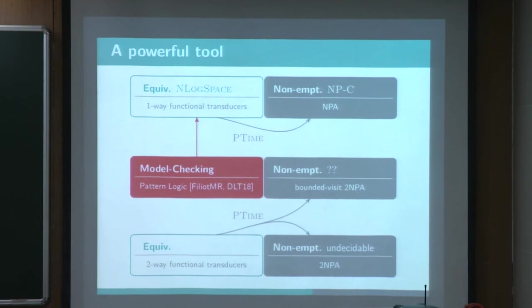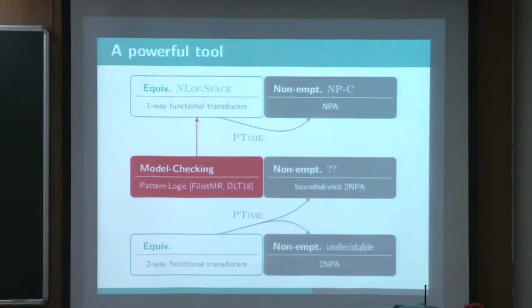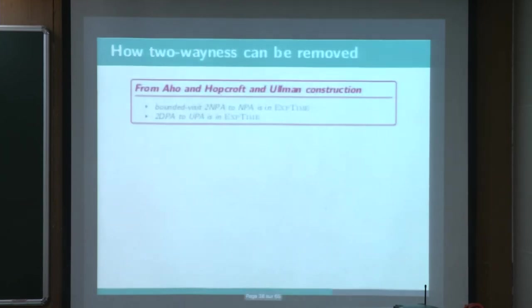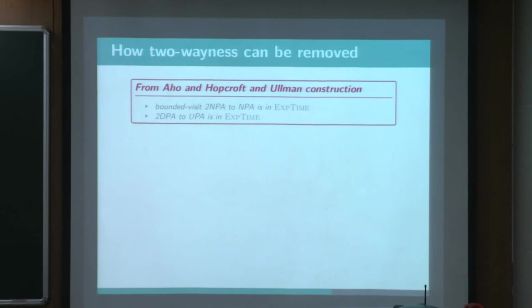So this is the case for transducer, because if you have a loop in the computation, either it doesn't output anything, and then it's not relevant, either it outputs something, but then that contradicts the functionality. In fact, those bounded visits provide a decidable non-emptiness, and this goes by getting rid of those two-wayness.